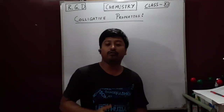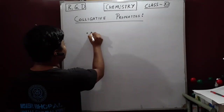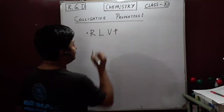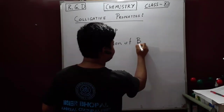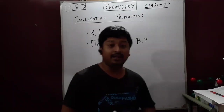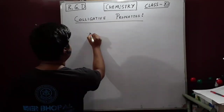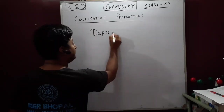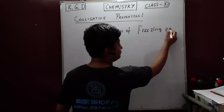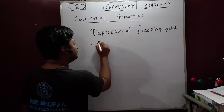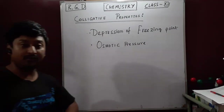In the last lecture, what we discussed were two out of four colligative properties: the relative lowering of vapour pressure and the elevation of boiling point. Now, in this lecture, we will learn the remaining two colligative properties, which are: number one, depression of freezing point, and number two, osmotic pressure.